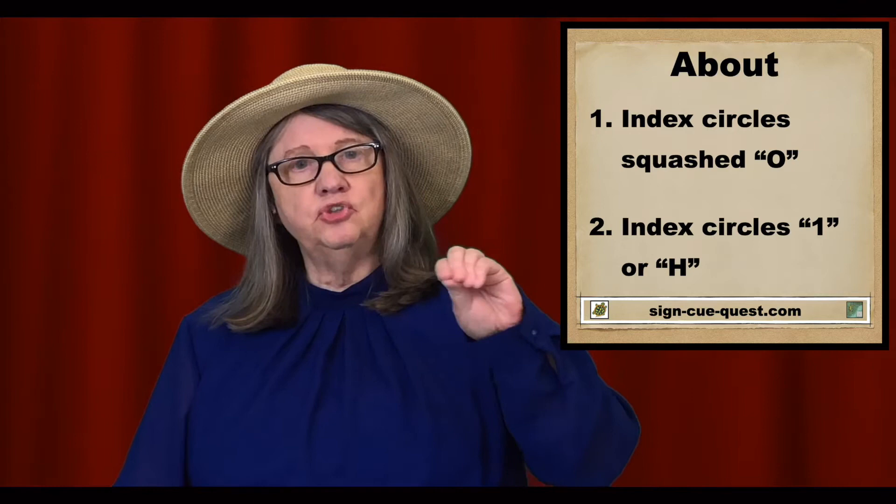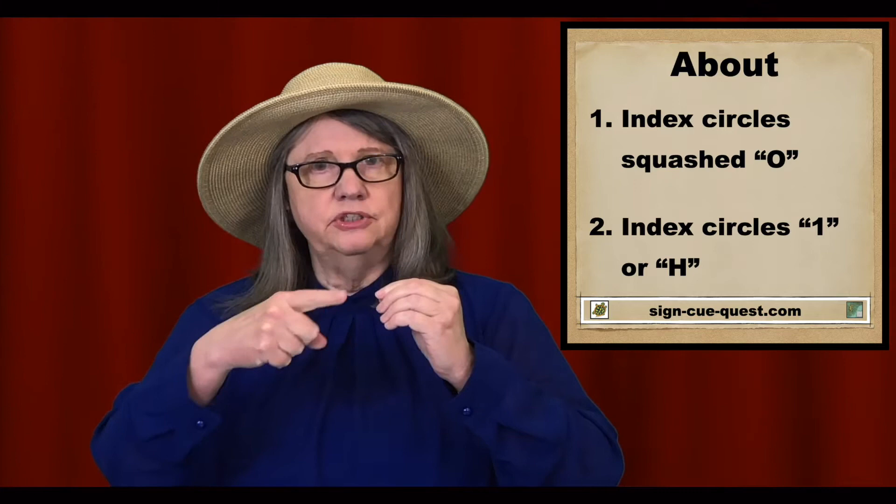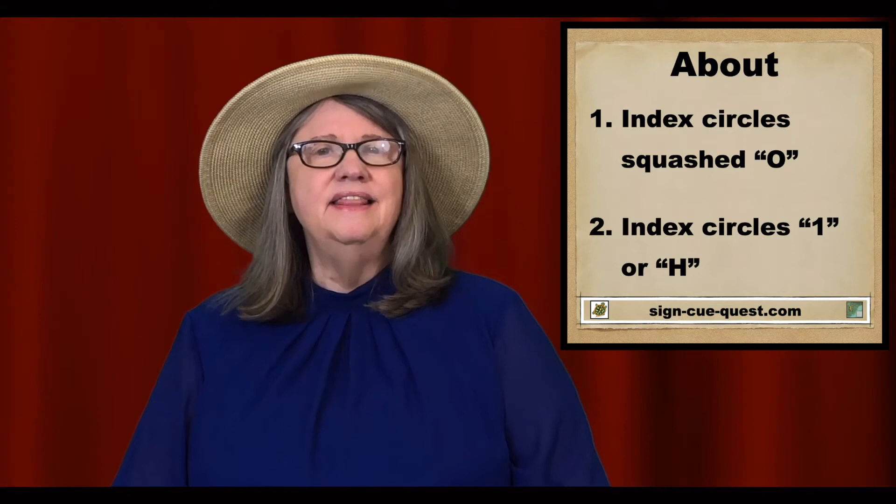The first way of signing is the non-dominant squashed O hand is held up, fingers facing towards the dominant side, and your dominant index circles it — about.